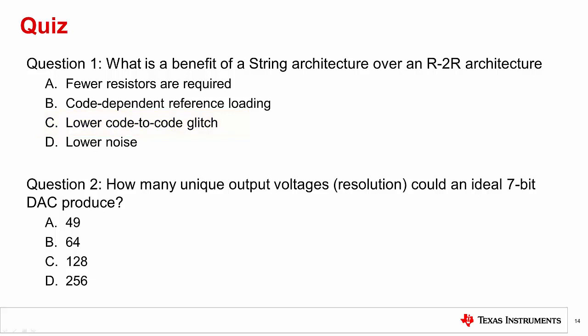Question 2. How many unique output voltages could an ideal 7-bit DAC produce? Is it a 49, b 64, c 128, or d 256? The answer is c, 128. The number of unique output voltages is equal to 2 to the n, where n is the bits of resolution the DAC has. In this case, 7, so it would be 2 to the 7th, or 128.